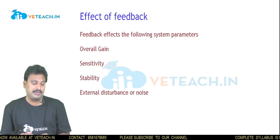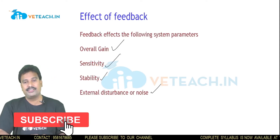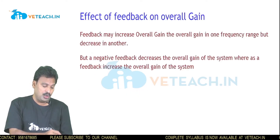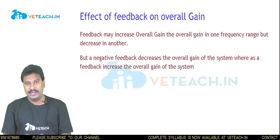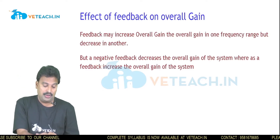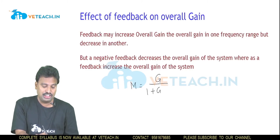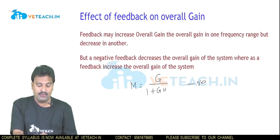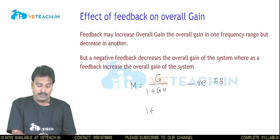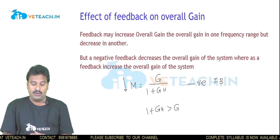The effect of feedback on the system: feedback affects overall gain, sensitivity, stability, and external disturbance or noise. First, the effect of feedback on overall gain — feedback may increase or decrease it. For a negative feedback system, M = G / (1 + GH). Since 1 + GH is always greater than G, it reduces the overall gain.